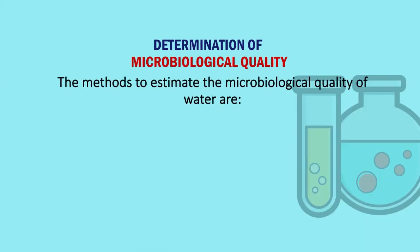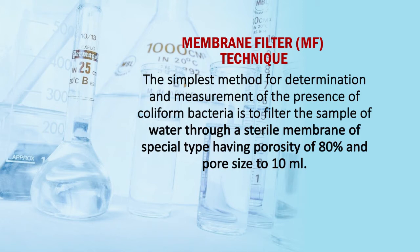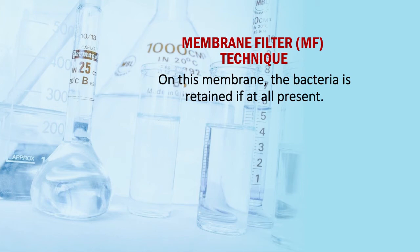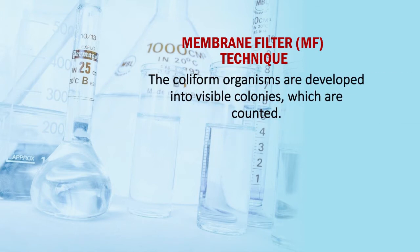Determination of microbiological quality: the methods to estimate the microbiological quality of water are the membrane filter technique, standard plate count test, and most probable number. In the membrane filter technique, the simplest method for determination of coliform bacteria is to filter the sample of water through a sterile membrane with porosity of 80% and pore size of 0.45 microns. The bacteria are retained on this membrane if present. After filtration, the membrane is put in contact with nutrients at 35 degrees centigrade for 24 hours, permitting growth of only coliform colonies. The coliform organisms develop into visible colonies, which are then counted.